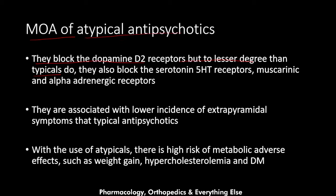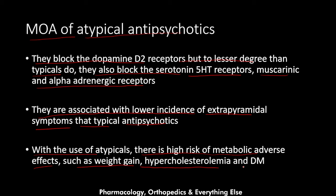Atypical antipsychotics also block dopamine receptors but to a lesser degree than typical antipsychotics. They also block serotonin 5-HT receptors, muscarinic receptors, and alpha-adrenergic receptors — that is what differentiates them. They are associated with a lower incidence of extrapyramidal symptoms because they block dopamine to a lesser degree, but they carry a higher risk of metabolic adverse effects such as weight gain, hypercholesterolemia, and diabetes mellitus.